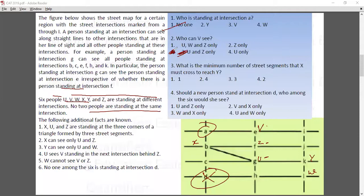Kindly ignore this error. What is the minimum number of street segments that X must cross to reach Y? X is here, Y is here.